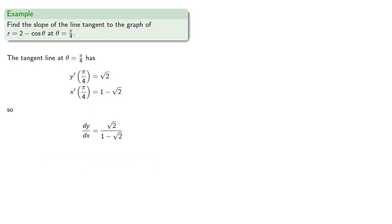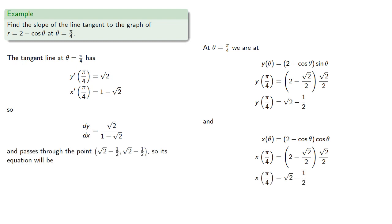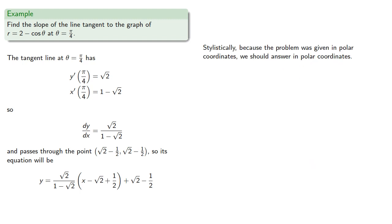And we need to find the point on the graph. So we find that at theta equals pi fourths we're at... And so this tangent line will pass through the point square root 2 minus one half, square root 2 minus one half. And so its equation will be... Now stylistically, because the problem was given in polar coordinates, we should actually answer in polar coordinates as well. And so in polar coordinates this equation will become...